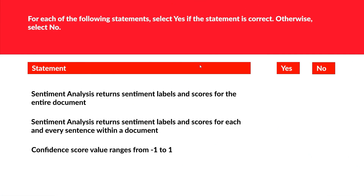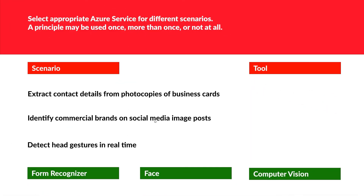This question is about sentiment analysis, which you need to understand clearly before your exam. The first statement — sentiment analysis returns sentiment labels and scores for the entire document — is true. The second statement — it returns labels and scores for each sentence within a document — is also true. The third statement — confidence score ranges from minus 1 to 1 — is false, because the value ranges from 0 to 1.